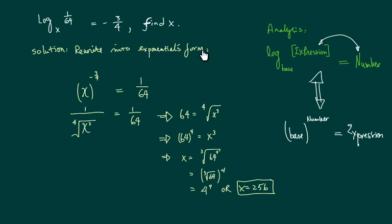Alright, so here's the solution. We're going to rewrite this log into exponential form, keeping the base which is this chunk over here. I'm going to swap those two numbers. x to the minus 3/4 equal to 1/64. Now from here it's pretty easy to solve.